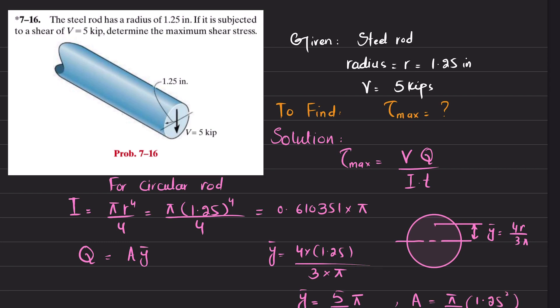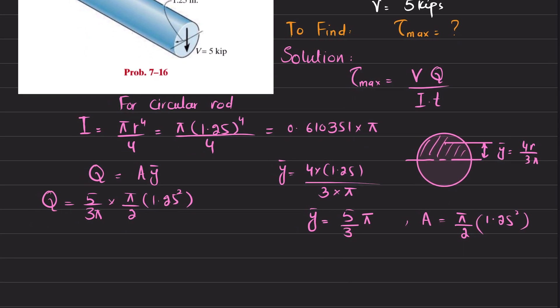This area will be π/2 times 1.25 squared, because the area of a circle is πr², and this is a semicircle, so π/2 r². You can put it in the formula: Q equals ȳ, which is 5 over 3π, multiplied by area, which is π/2 times 1.25 squared. When you solve this, you will get Q equal to 1.30208 inch³.